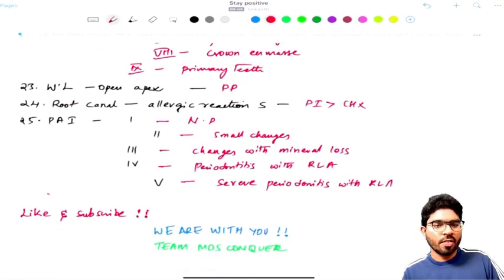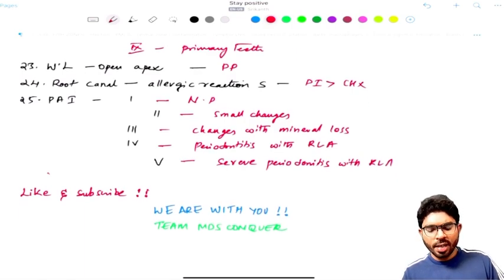Working length method of determining in the case of open apex cases or blend of root analysis by using the paper points. And do make a note, already discussed - paper points are sterilized by what method? Yes, it is dry heat sterilization method, that's nothing but called as glass bead sterilizer. And root canal irrigation solution showing allergic reactions is potassium iodide as well as chlorhexidine. Both options are there. Better to go with potassium iodide as the best option.